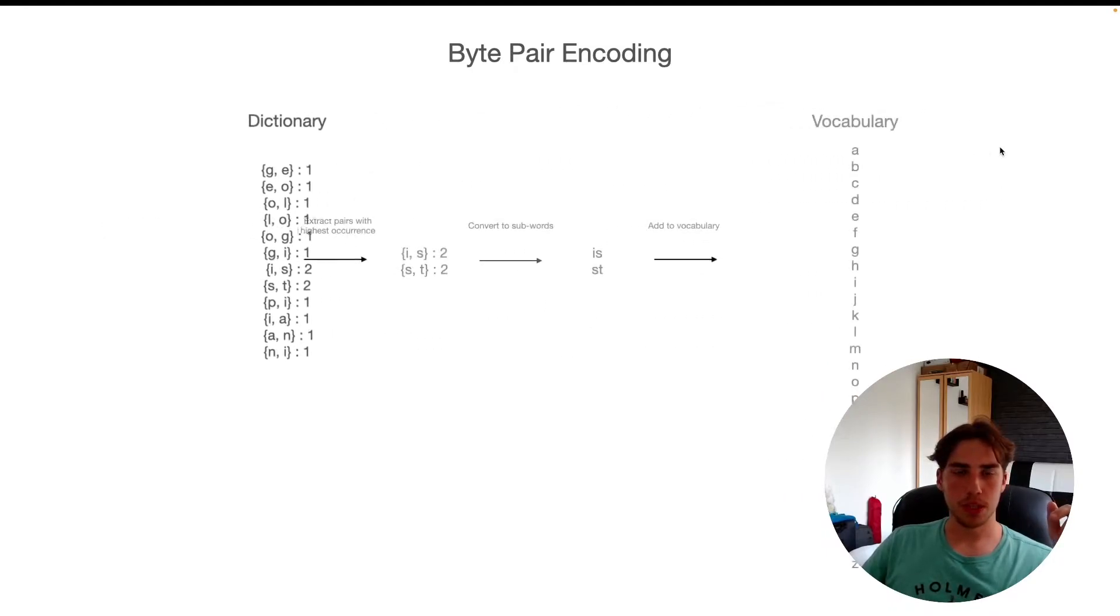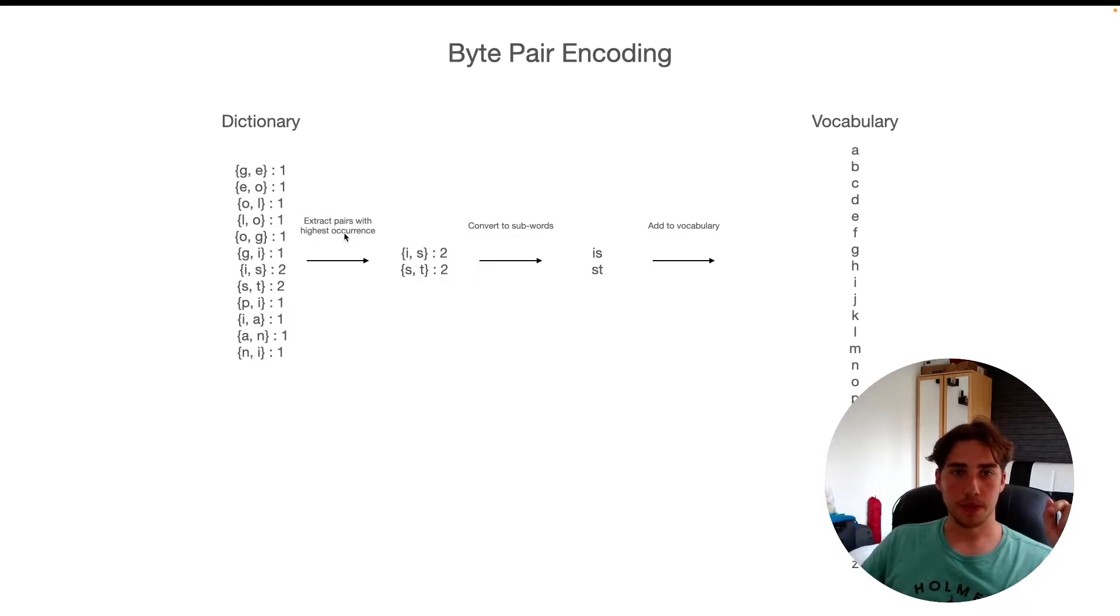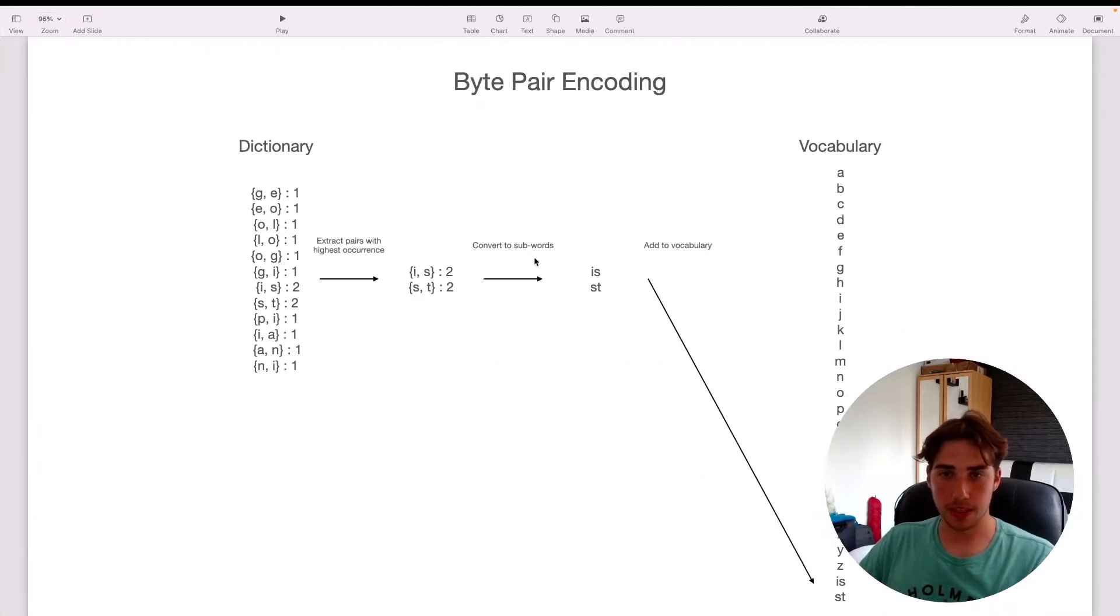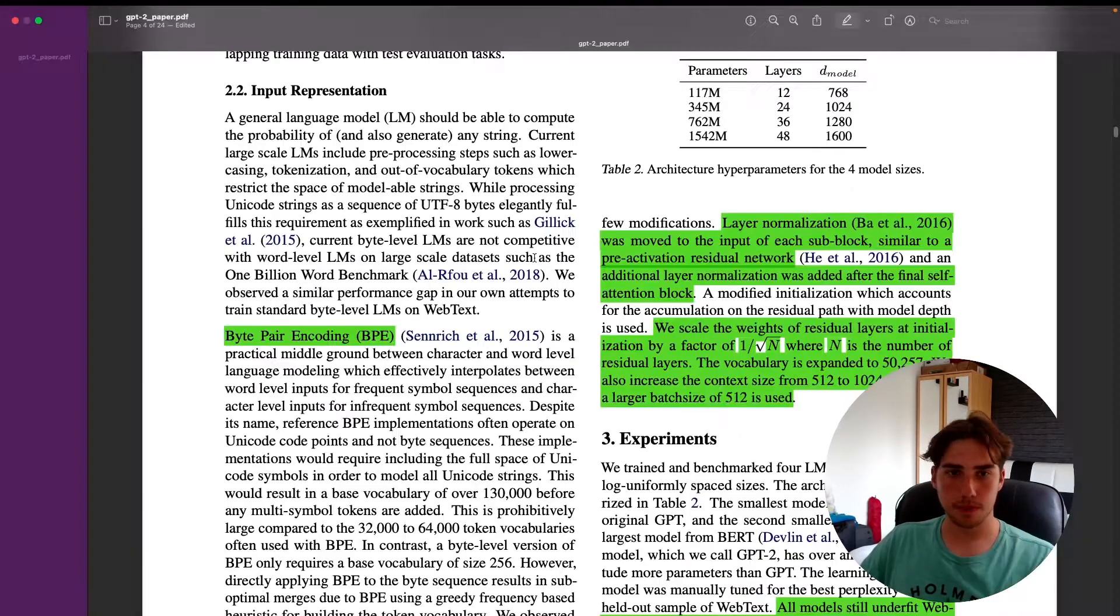Next, what we do: we take the dictionary, we extract the pairs with the highest occurrence—so in our case it's 'ist'—we convert them to subwords and add them to the vocabulary. In this case we increase the vocabulary and we basically repeat that process until we get the desired size of the vocabulary. If you think about it, we can create subwords like 'ing' which are indicators of verbs. This is the method they used; it's pretty simple, actually. In this case, the desired size of the vocabulary is 50,257 subwords. That's byte pair encoding.